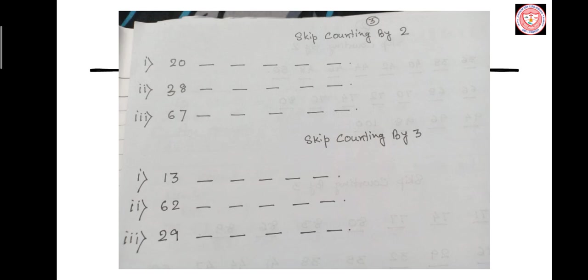In skip counting by 5, all numbers end with a 5 or a 0.